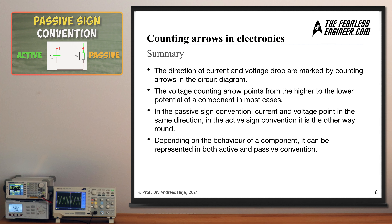To summarize: the direction of current and voltage drop are marked by counting arrows in the circuit diagram. The voltage counting arrow points from higher to lower potential in most cases. In the passive sign convention, current and voltage point in the same direction; in the active sign convention it is the opposite. A component can be represented in either convention, but choosing the non-standard convention reverses the sign of the voltage drop in the loop equation. If you have any questions, drop a comment below. See you next time on the Fearless Engineer.